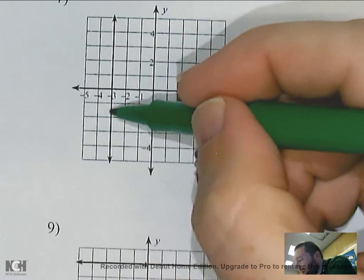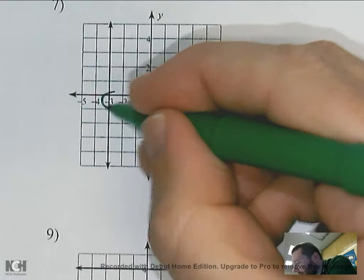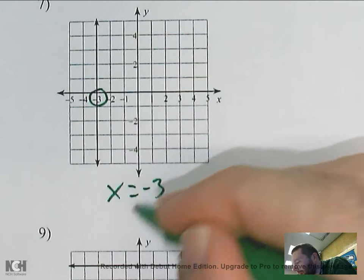All these points only have one x value — they all share the same x value. That x value is negative three, so the equation for this line would be x equals negative three.